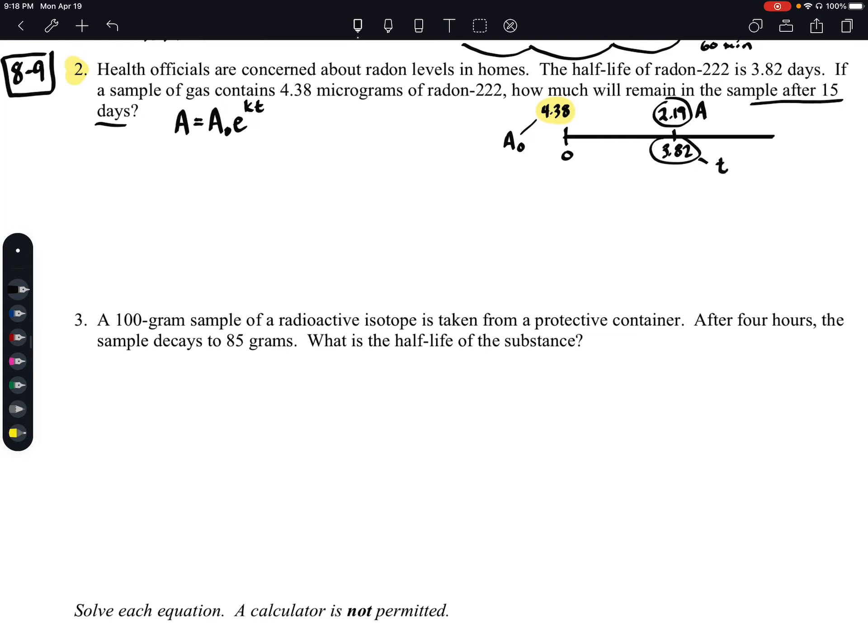Okay, so what we're going to do is we're going to use these three to help us figure out what K is. Let's plug them in first. We've got 2.19 is equal to 4.38 times E raised to the power of K times 3.82.